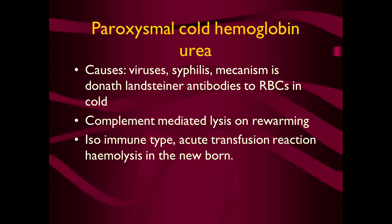Paroxysmal cold hemoglobinuria is a kind of hemolytic anemia in which the causes are viruses and syphilis. The mechanism is formation of Donath-Landsteiner antibodies to RBCs in the cold. It is also mediated by complement, and finally there is hemolysis on rewarming when the patient returns from the cold. One variety is immune-type, which follows acute transfusion reactions, and there is hemolysis in newborn babies.